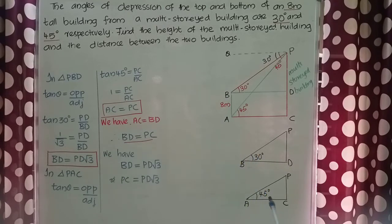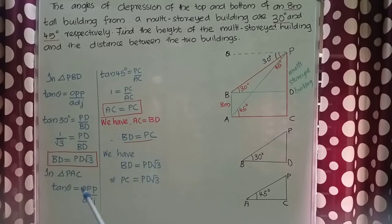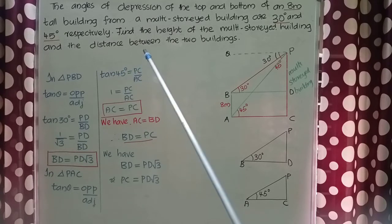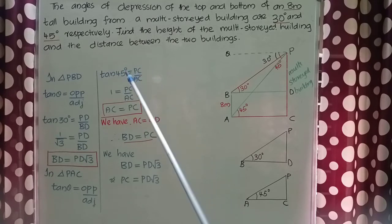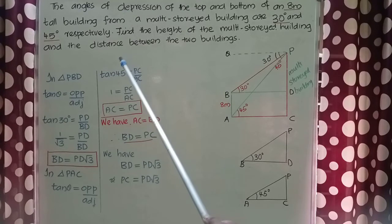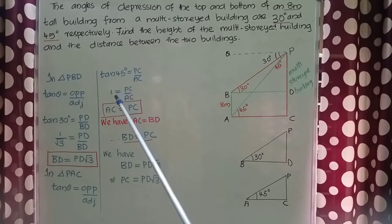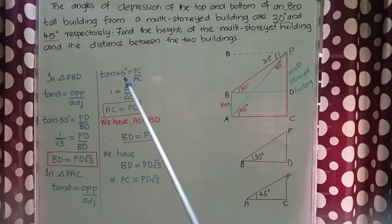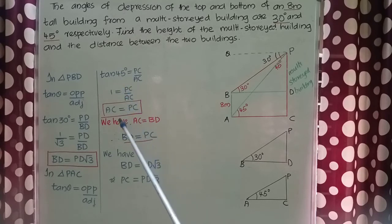Now we can take the ratio in the second triangle PCA. tan θ = opposite side / adjacent side, that is, tan 45° = PC / AC. We know tan 45° = 1, so we get 1 = PC / AC. Cross multiplying, we get AC = PC.